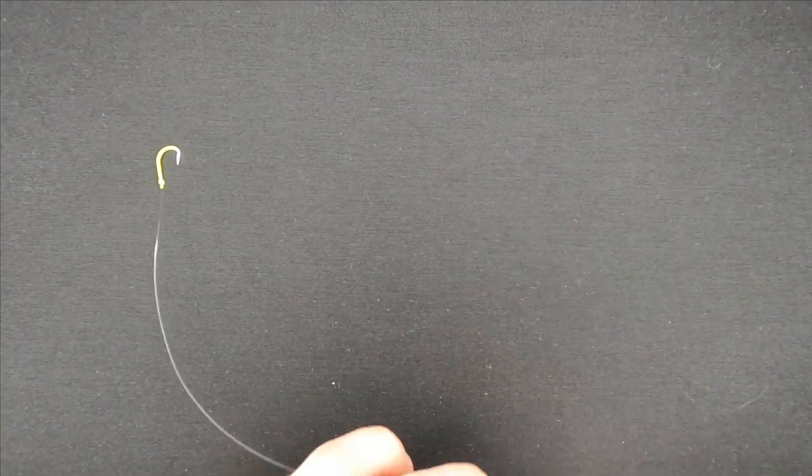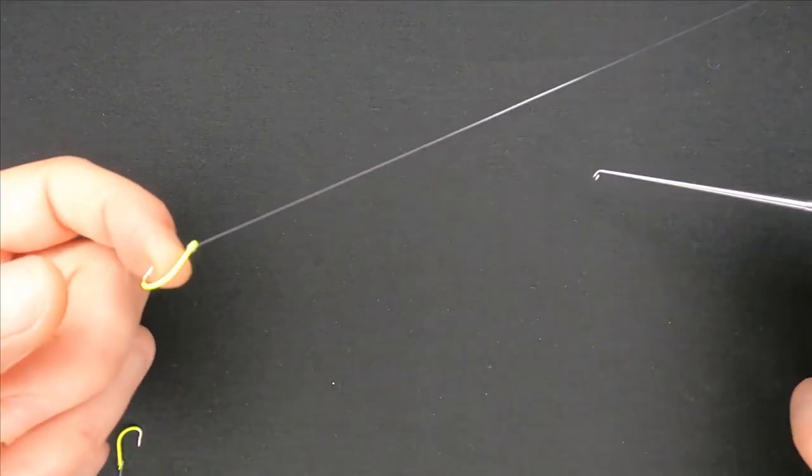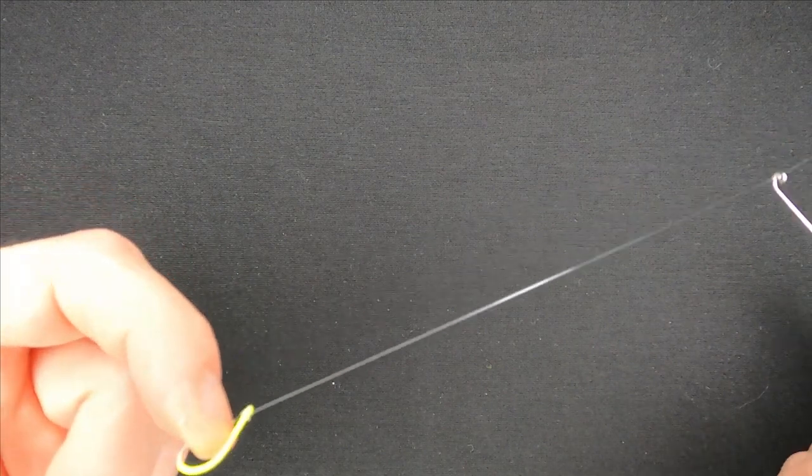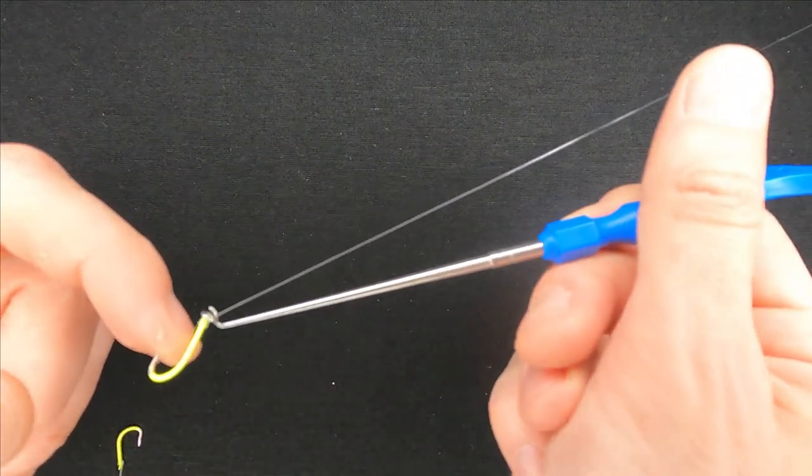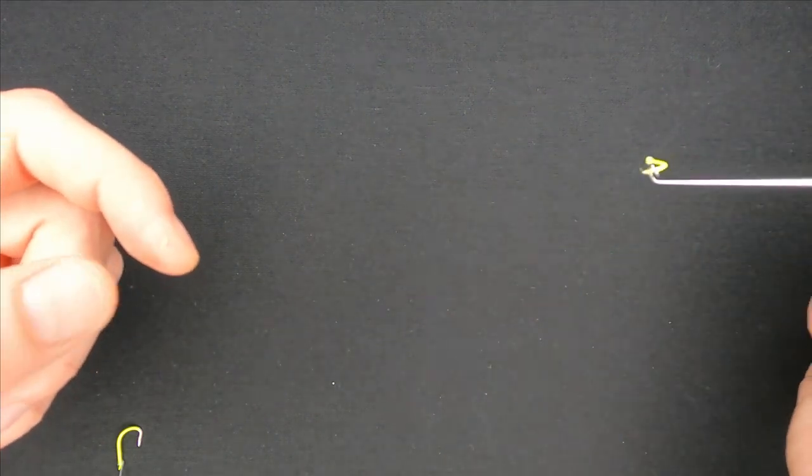To remove the hook from the fish's mouth you simply put the hook remover around the line and gently slide it to the fish's mouth. Locate the hook, push the tool a bit to unhook the fish and just remove it.